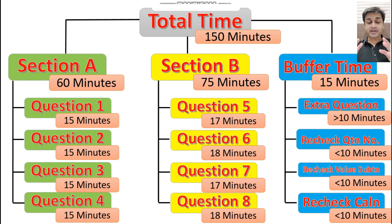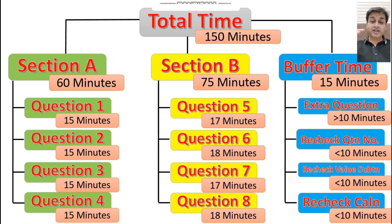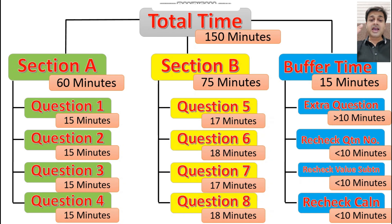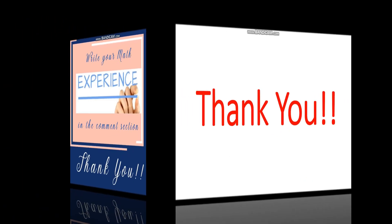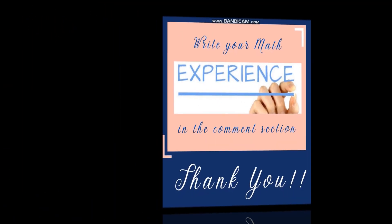I hope this video helps you understand time management and how to use your extra time so you can finish your paper comfortably within the time limit. Please try this at least once or twice before your final paper, and once you make it a habit, it becomes automatic: 15 minutes per main question in Section A, 18 minutes per main question in Section B, finish in 2 hours 15 minutes, and use the last 15 minutes as buffer time. Please let me know if you did well by writing in the comment section. Thank you — take care, stay safe, pray for everyone, and be honest.